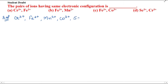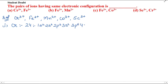First I'll find the electronic configuration of each atom and then subtract the electrons to get the ionic configuration. Starting with chromium: the atomic number of chromium is 24. Its electronic configuration is 1s² 2s² 2p⁶ 3s² 3p⁶ 4s¹ 3d⁵ — this is the exceptional electronic configuration of chromium. Now I have to find the electronic configuration of Cr³⁺.